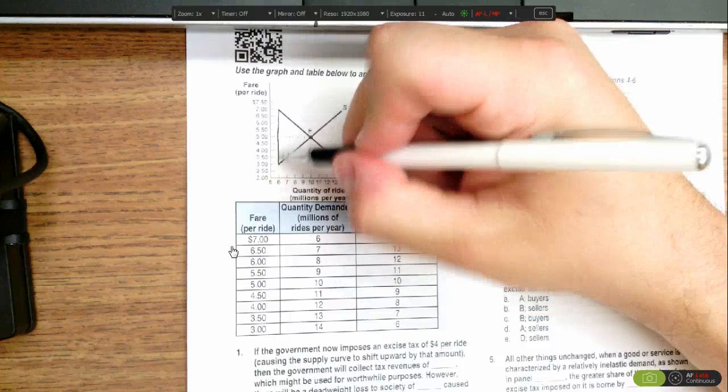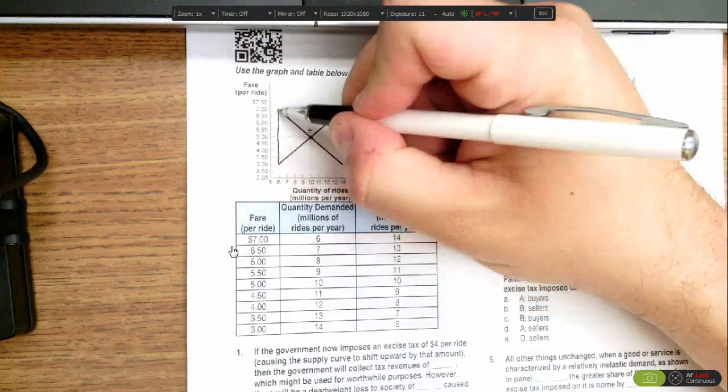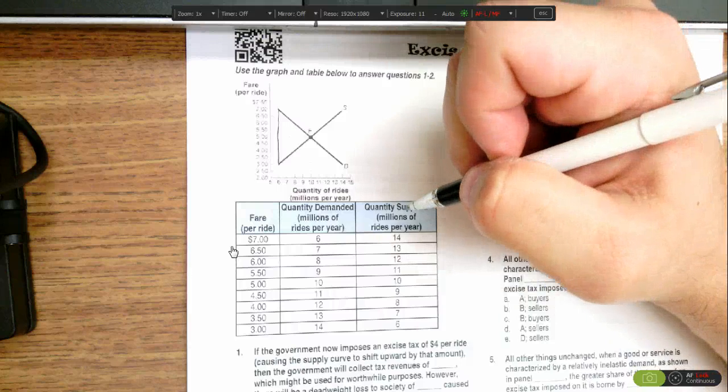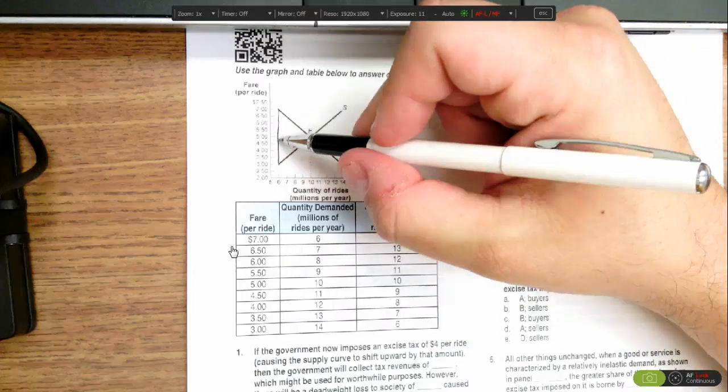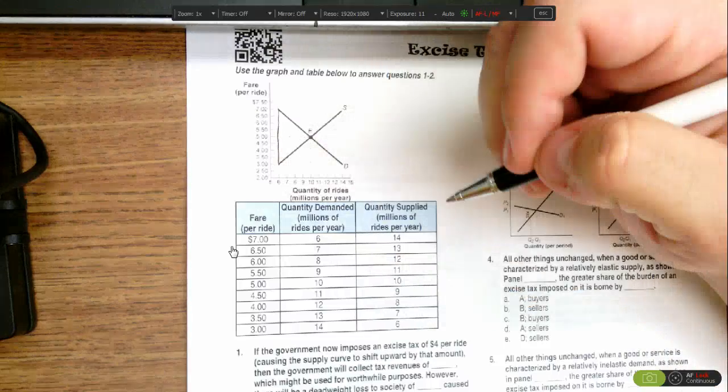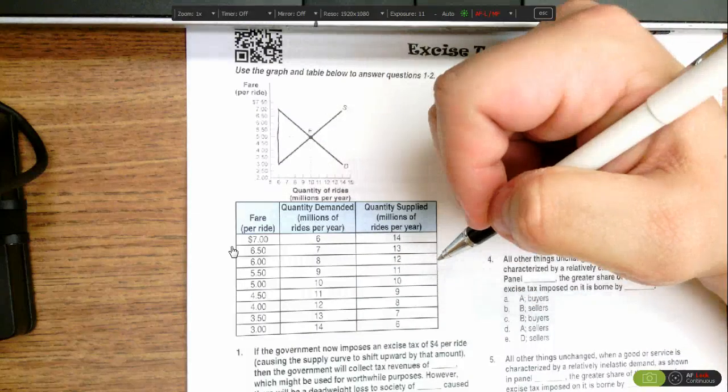We know that's a $4 gap, so that's where the tax belongs. The tax revenue would be the tax, $4, times every taxi ride, which is 6 million taxi rides. That gives us $24 million in tax revenue.